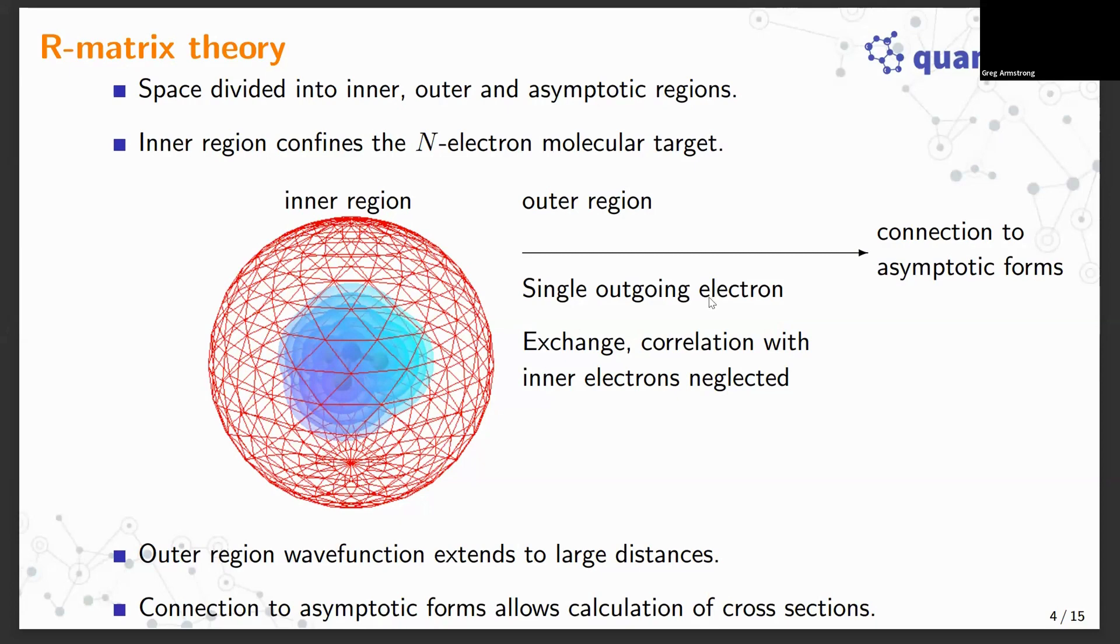The choice of this inner region boundary has to be made such that in the outer region it's valid to neglect exchange and correlation with inner electrons. Subsequently, the single outgoing electron wave function in the outer region is propagated to large distances, and at large distances it's connected with known asymptotic forms. From that connection you can determine phase shifts, S and K matrices, and ultimately the cross sections.